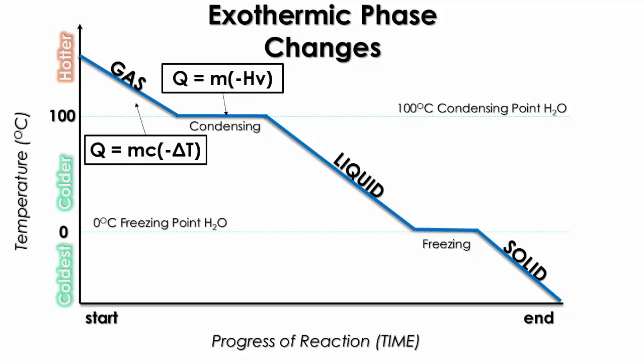When you undergo the first phase change and the gas condenses, you're going to be using Q = M(−HV). This means that the heat of vaporization is negative to symbolize the exothermic change. As the liquid starts to cool, we again use Q = MC(−ΔT), because the final temperature and starting temperature, when subtracted, always give a negative answer.